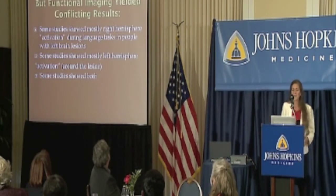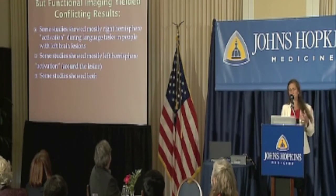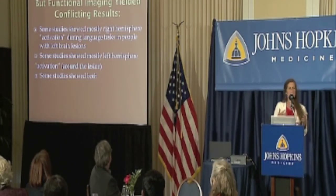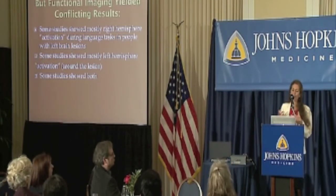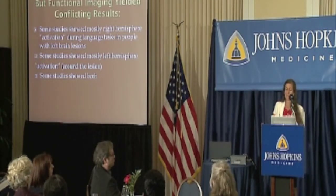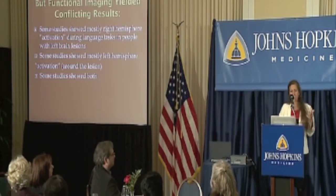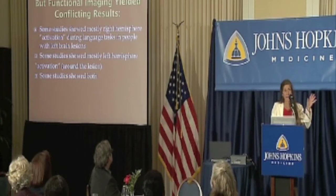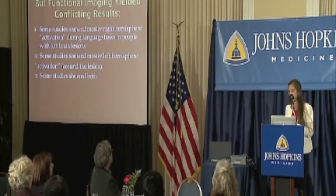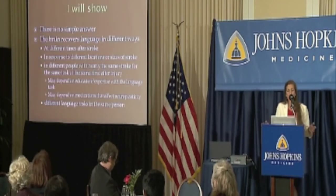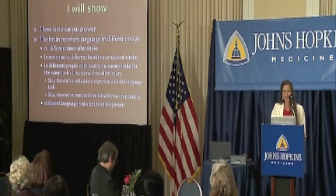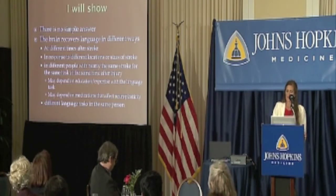In the 1980s, functional imaging came along and we could look at areas that activated during language tasks. These studies raised controversy: some showed right hemisphere activation in recovered aphasia patients, others showed left hemisphere activation around the stroke, and others showed both. I'm going to show that there's really no simple answer — the brain recovers language in different ways, depending on the time after stroke, and the location and size of the stroke.